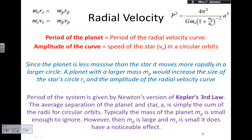So that's Newton's version, the average separation of the planet and the star. And they have that average separation, a, is simply the sum of the radii for the circular orbits. Typically the mass of the planet MP is small enough to ignore, so you can take it away in your calculations. However, when MP is large and MS is small, it does have a noticeable effect.